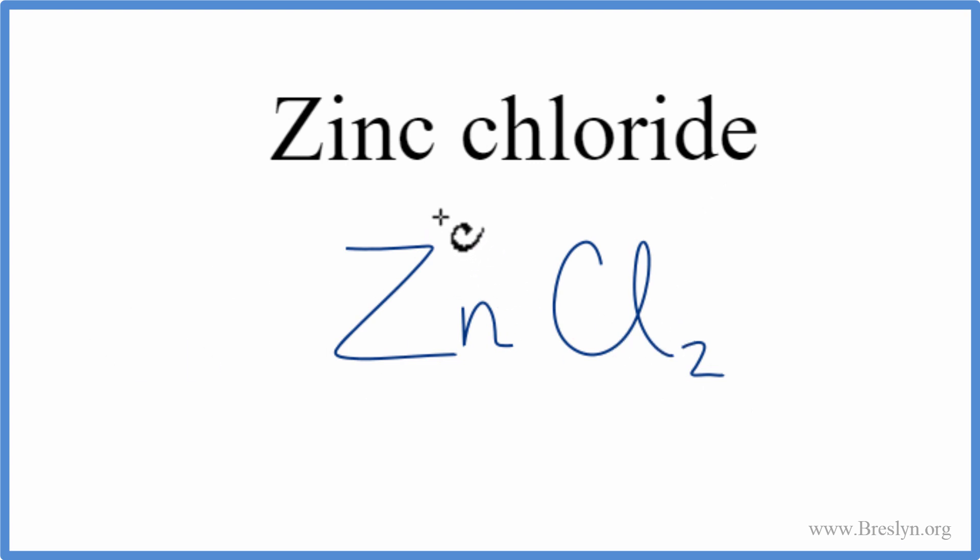So remember, zinc was a two plus, and chlorine was a one minus. I have two chlorine atoms—two times the one minus gives me the minus two there. And zinc, one times the two plus, that's plus two. Plus two and minus two adds up to zero, so the net charge is zero. And this is the formula for zinc chloride, ZnCl2.